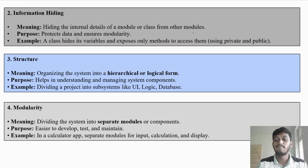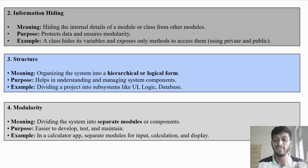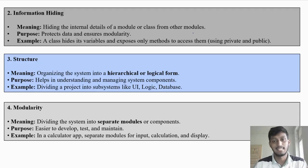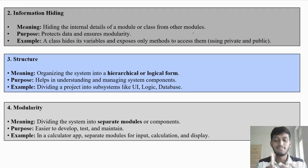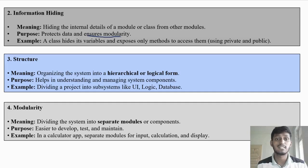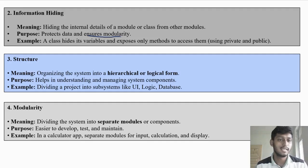Consider one module — a class. All its variables and functions are internal details; you hide them from other classes using private or protected. The purpose is to protect data and ensure modularity — data is protected so no one can access it arbitrarily, and modularity is ensured so all related data stays in one module. A class hides its variables and exposes only methods to access them using private and public.